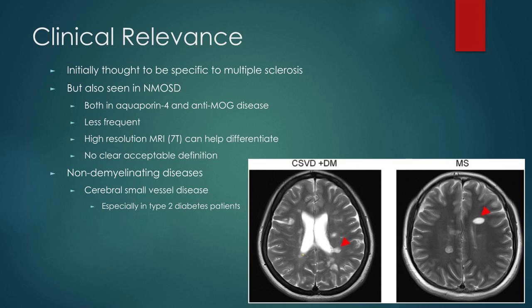How clinically relevant is this? When these lesions were first described they were thought to be specific to multiple sclerosis, but now that we know much more about the mimics and have more advanced imaging, that's not the case. They are also seen in patients with neuromyelitis optica spectrum disorder, including those with anti-AQP4 and anti-MOG antibodies, although they are less frequent.